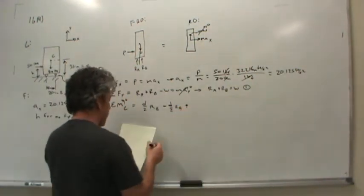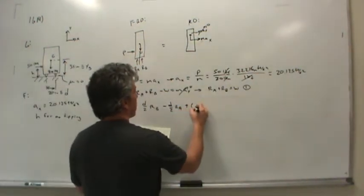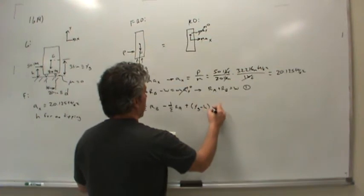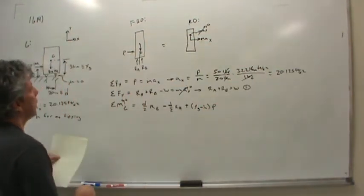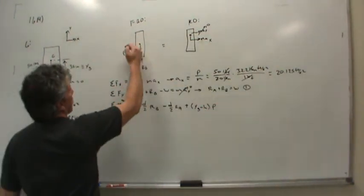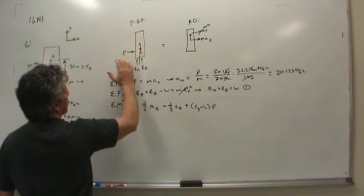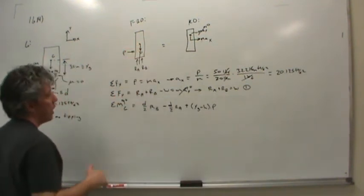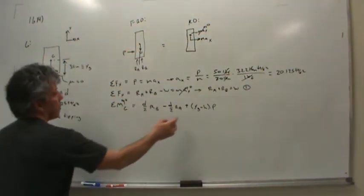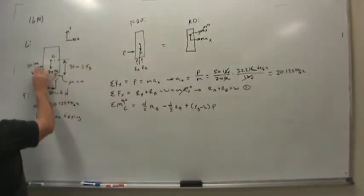And then P also, of course, has a moment that is yg minus h. How did I come up with that? Well, if I'm summing moments about this point and P is below the center of gravity, if I imagine it that way, it's helpful for setting up the equation. Then it would be yg minus h. That's this distance here.